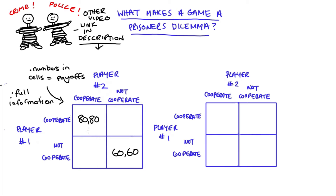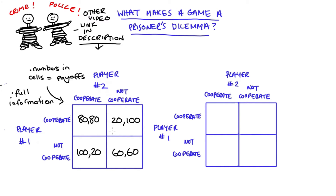If player one does not cooperate but player two does, that's the best outcome for player one but the worst outcome for player two - so let's say 100 goes to player one and 20 to player two. Where player one cooperates but player two does not, we get the opposite result: player one gets 20, which is the worst for them, and player two gets 100, which is the best for them.